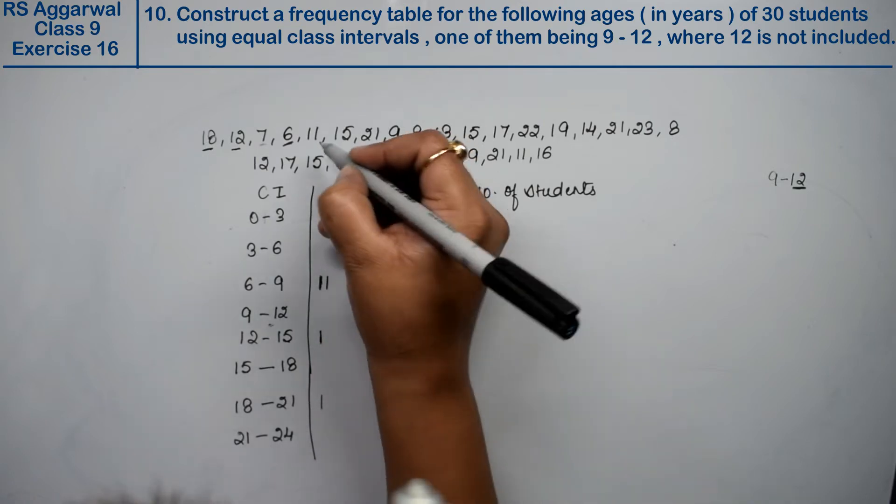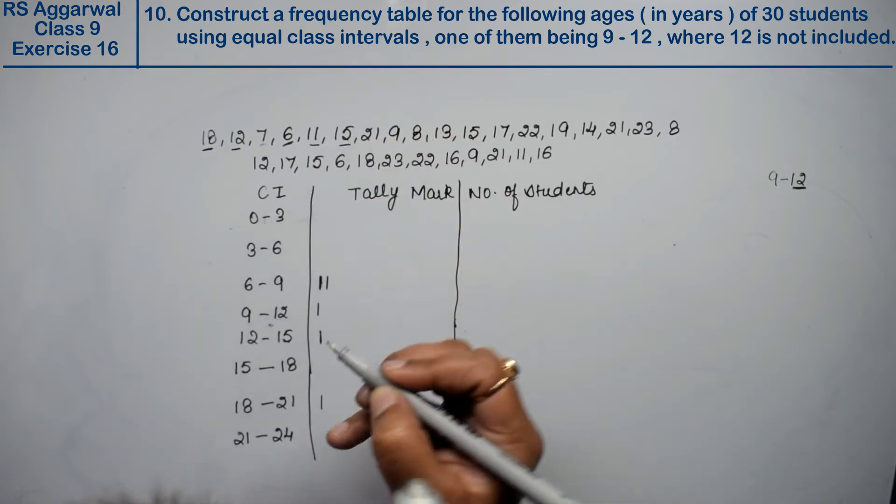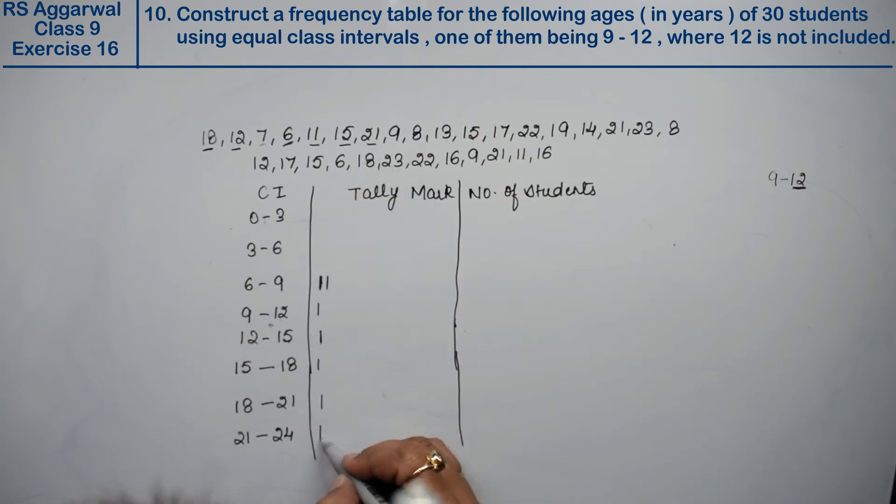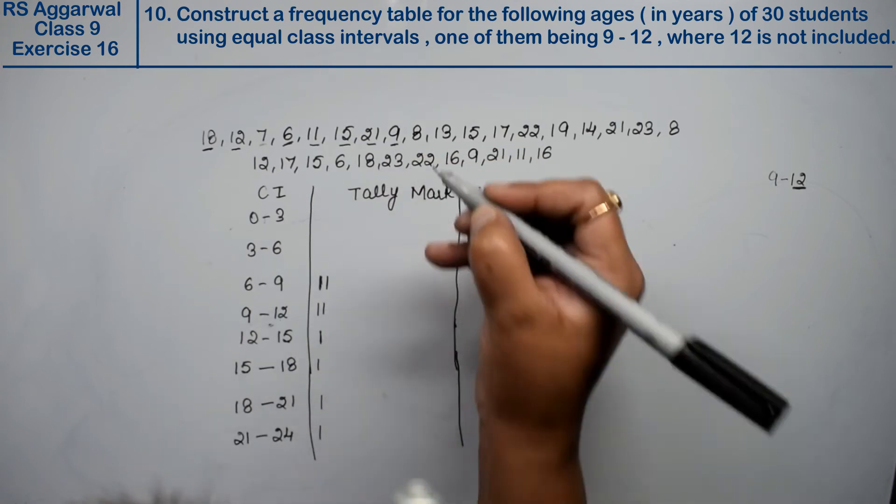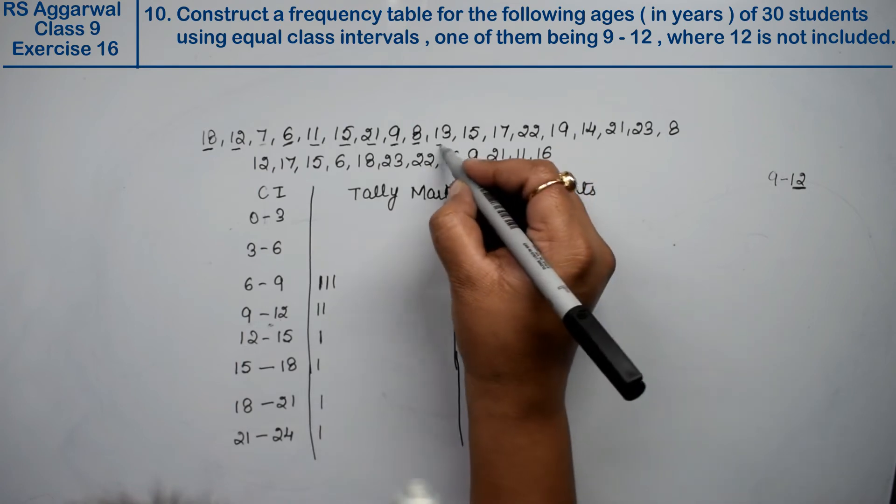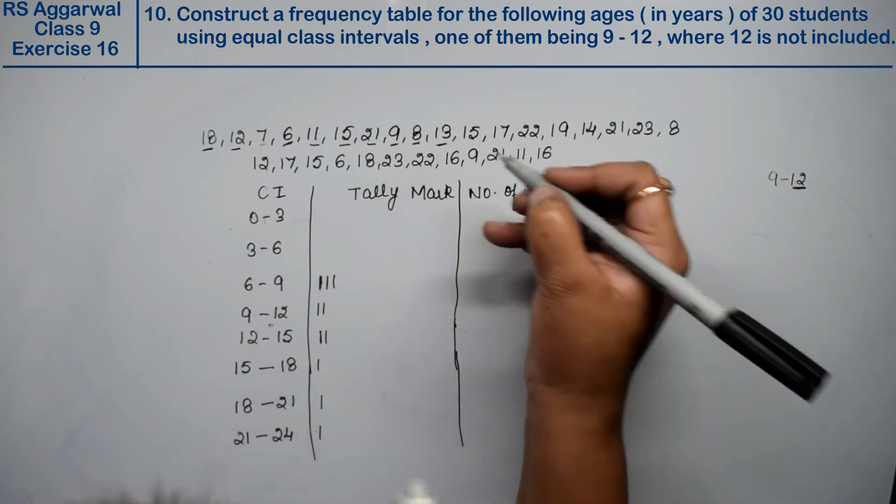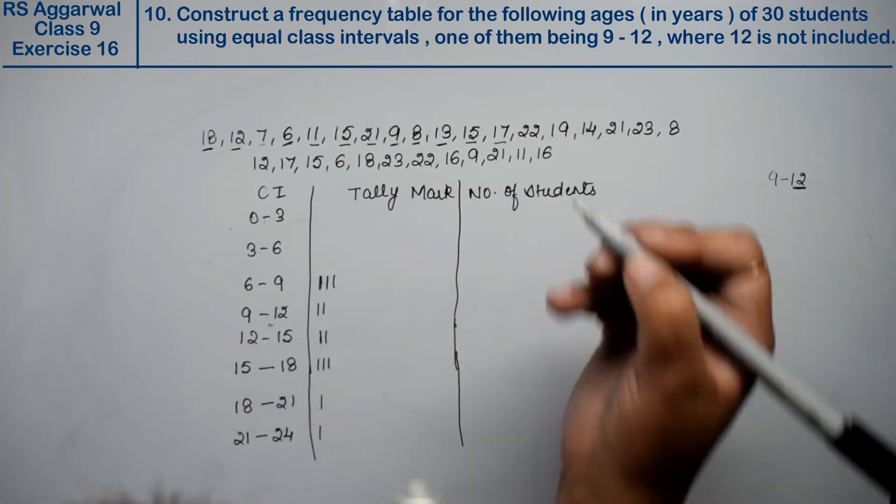11 goes in 9 to 12. 15 goes in 15 to 18. 21 goes in 21 to 24. 9 goes in 9 to 12. 8 goes in 6 to 9. 13 goes in 12 to 15. 15 goes in 15 to 18. 17 goes in 15 to 18.